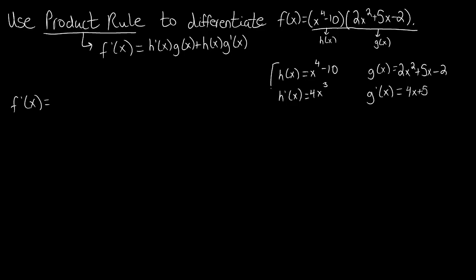So once we get to this step, we have the four necessary pieces of the puzzle that we need in order to take our derivative of the original function f(x). We're going to come down here and use this framework that we wrote down to figure out what our derivative looks like. So first we're going to plug in h prime of x, which is 4x cubed, and then the next part tells us to plug in g(x). g(x) is right here, so we have 4x cubed times (2x squared plus 5x minus 2), and then after that we're going to add the product of h(x), x to the 4th minus 10, times g prime of x, which is 4x plus 5.